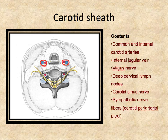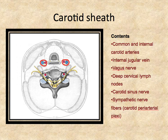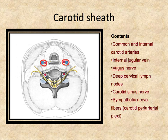The carotid sheath contains some very important structures. It contains both the common and internal carotid arteries, depending on how high or low you are in the neck, and the internal jugular vein, which you'll usually see right away when you open the carotid sheath. Other structures you'll have to dig around for include the vagus nerve and possibly deep cervical lymph nodes, depending on pathology in your cadaver. If you're very careful, you might find the carotid sinus nerve coming from the glossopharyngeal nerve, and most likely you'll see sympathetic nerve fibers forming a carotid periarterial plexus — spiderweb-like fibers surrounding the carotid arteries.